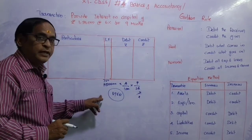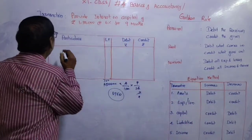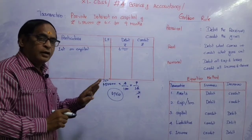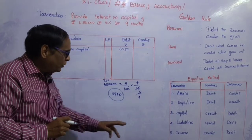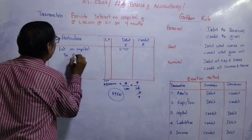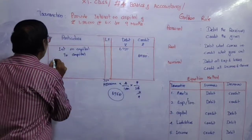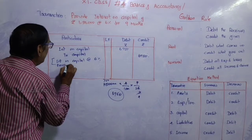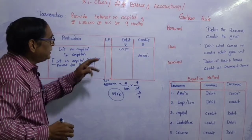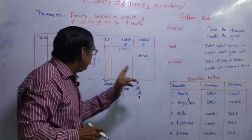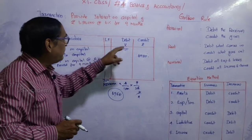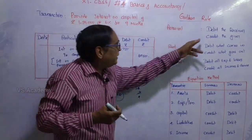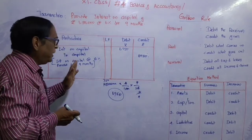Interest on capital is an expense. Increase in expenses should be debited, so interest on capital account is debited ₹6,750. Since interest is added to the capital account, capital increases and should be credited. Under the golden rule, debit all expenses and losses; capital account falls under personal rule — credit the giver — so capital account is credited ₹6,750.